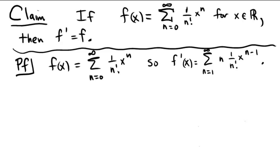Notice that here we have an n, and in the denominator we have an n factorial. The first number in the n factorial is going to reduce, leaving us with the remaining n minus 1 factorial. Thus, f prime of x is actually equal to a sum of n equals 1 to infinity of 1 over n minus 1 factorial x to the power of n minus 1.